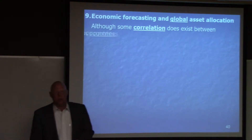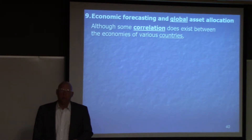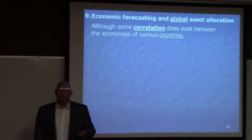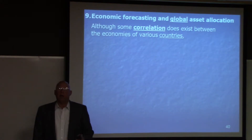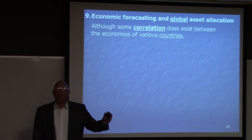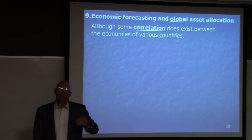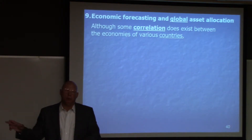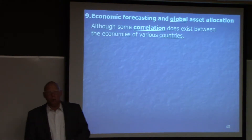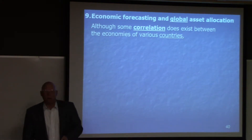There is some correlation between the economies of various countries. Typically, the hemispheres will move together. America, Mexico, and Canada tend to move together. Latin America tends to move through its own cycles. Asia tends to move through its own cycles with very little correlation between the Northern Hemisphere and Asia. There's some closer correlation between the Northern Hemisphere and the Eurozone. So there are some correlations, and the correlations are different around the world.